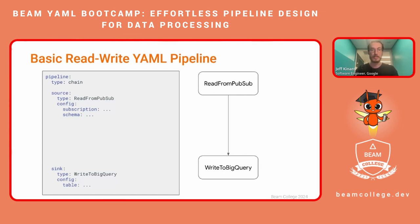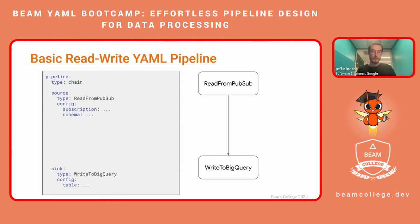A basic reading and writing YAML pipeline: in this example we're reading from PubSub and writing to BigQuery. Every pipeline starts with the pipeline tag at the very top. If you specify chain, every transform you define will be chained one after the other. One of our syntactic sugars is defining a source and a sink — not required, but it makes things more organized. Our source is of type read from PubSub, with a config specifying your subscription and schema. The sink is writing to BigQuery, where your config may be a table.